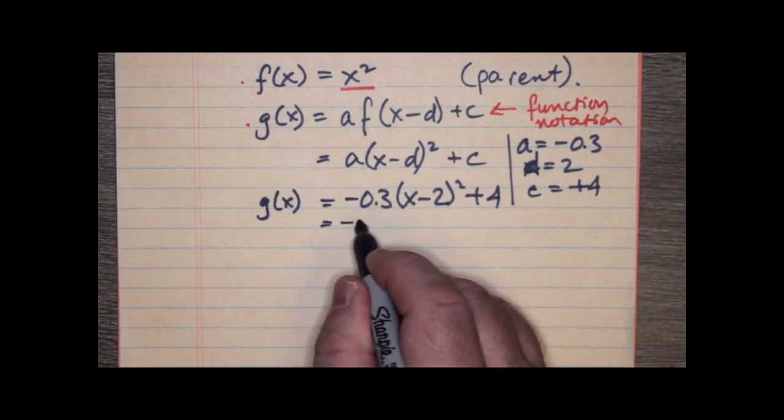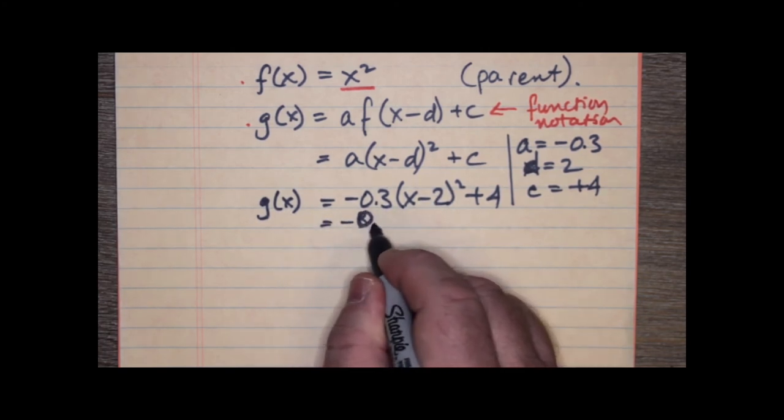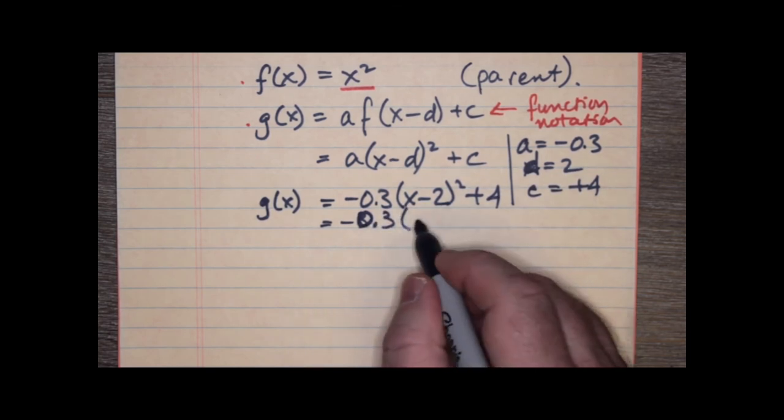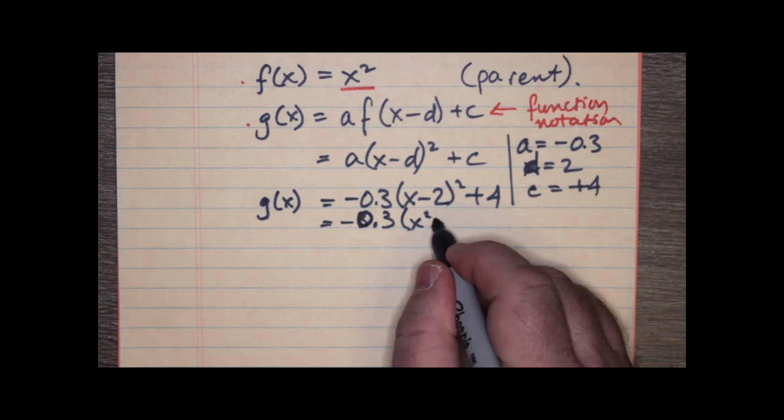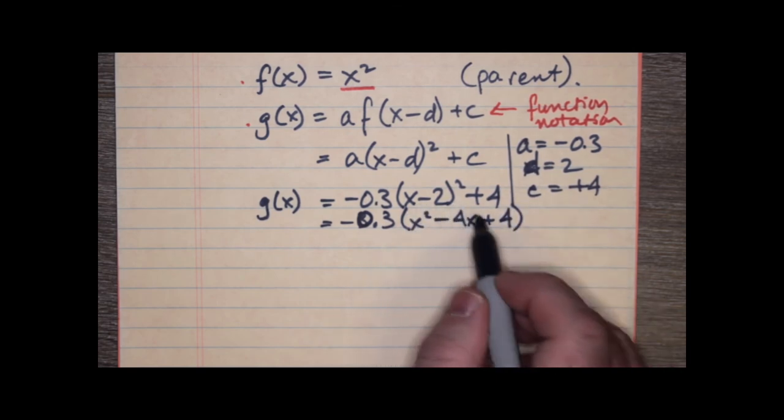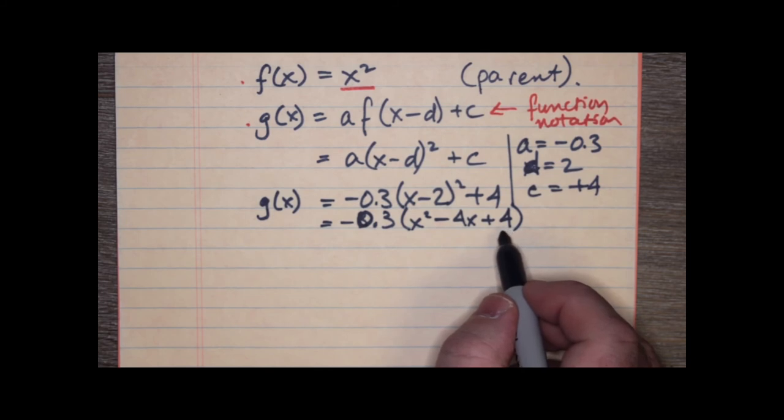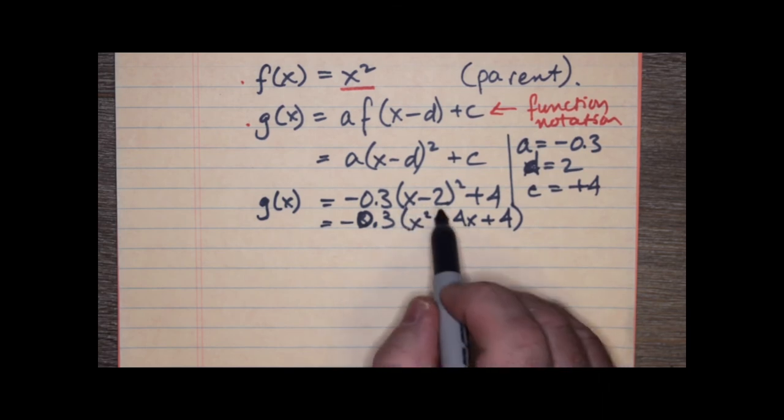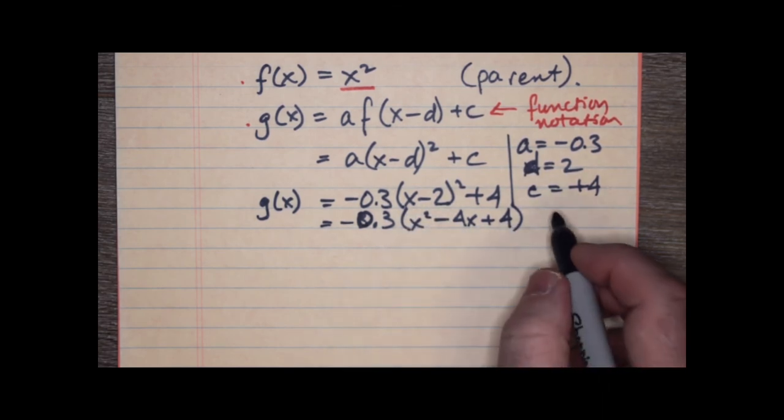So, that means we still need to reckon with 0.3, but we'll save that for later. And then we have x squared minus 4x plus 4. That's what x minus 2 expands to, right? x times x is x squared.